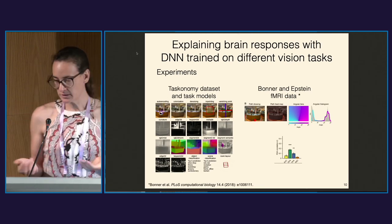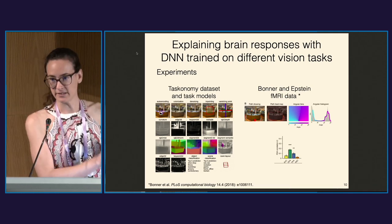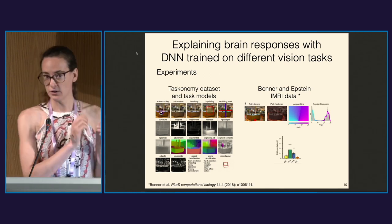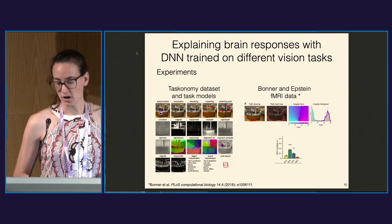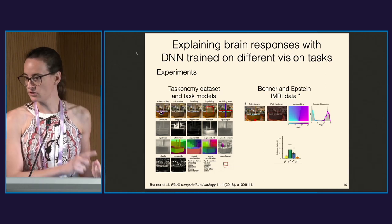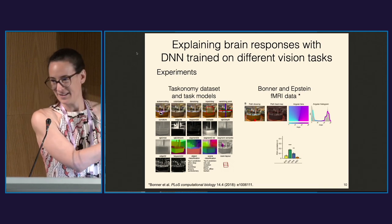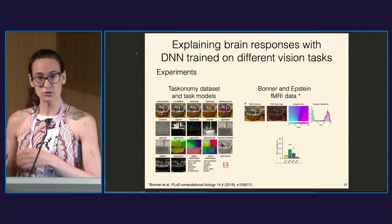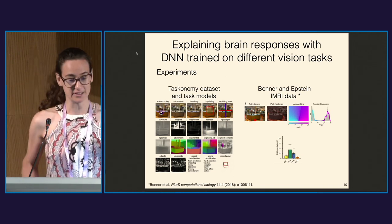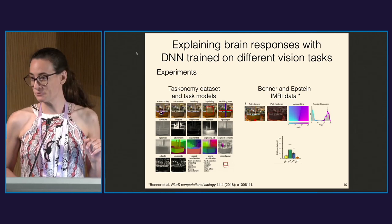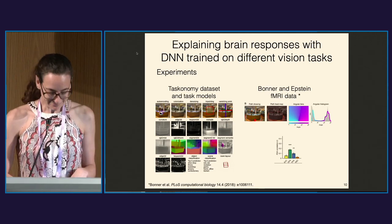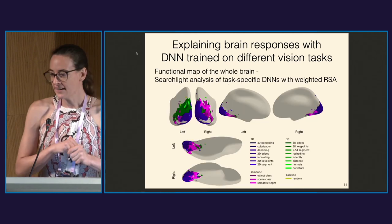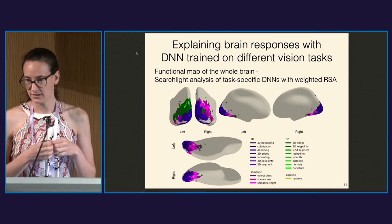In our experimental setup, we have a set of models trained on a large dataset called Taskonomy, where the same images have annotations for different visual characteristics: segmentation, object recognition, scene classification, 3D prediction, and so on. We then use a disjoint set of images to extract activations from both the models and the brain. The neural data was recorded in collaboration with Boner from Johns Hopkins, not in my own lab.